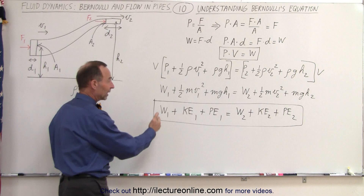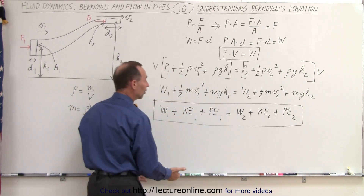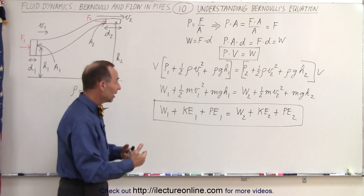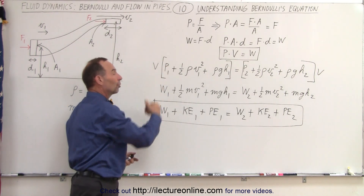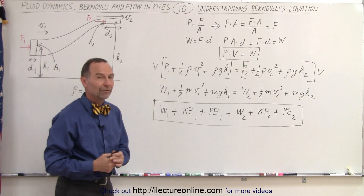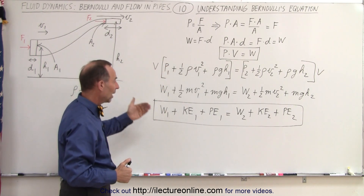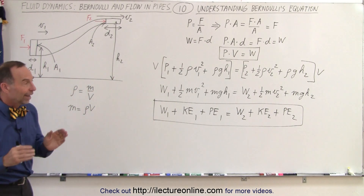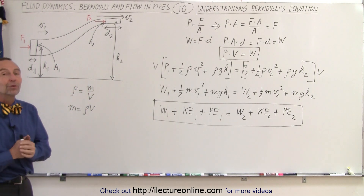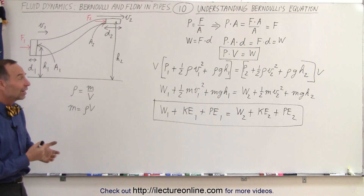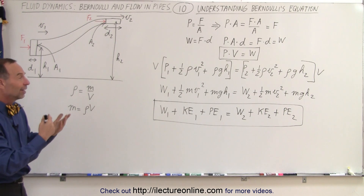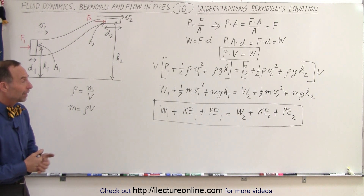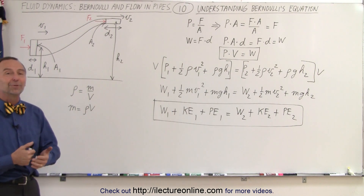Bernoulli's equation is nothing more and nothing less than the energy conservation equation, except put into a format where every term equals pressure rather than energy or work. We can take the energy conservation equation, divide both sides by volume, and convert it into Bernoulli's equation where every term is in terms of pressure rather than work and kinetic energy. That's where Bernoulli's equation came from — it's quite ingenious and smart to think about it, and that is how it's done.